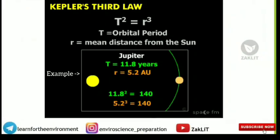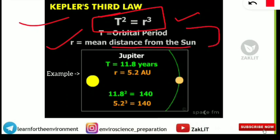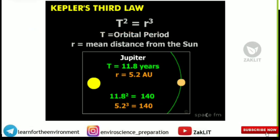In the last video we discussed Kepler's First and Second Laws. Kepler's Third Law is very simple — just remember the formula: T² = R³, where T is the orbital period and R is the mean distance from the Sun of any planet. One value will be given and you have to find the other. No need to worry, just remember this formula.